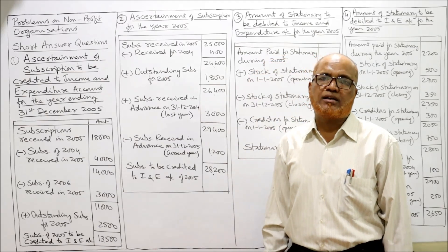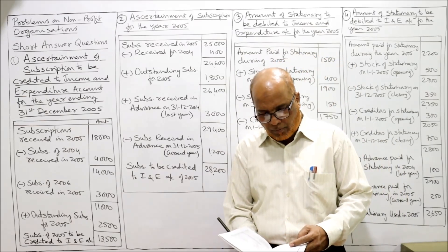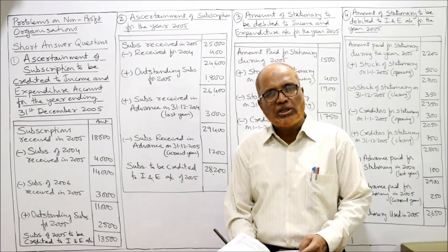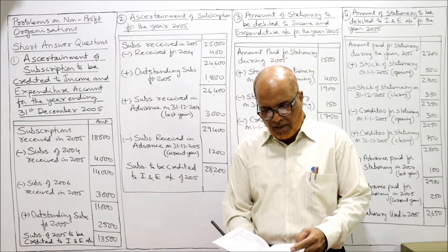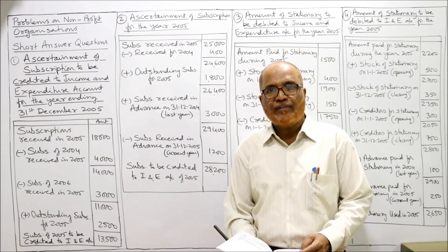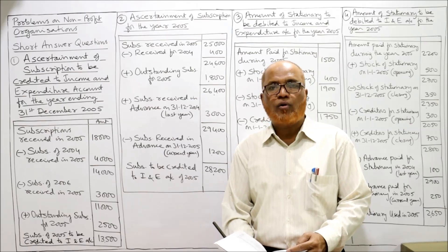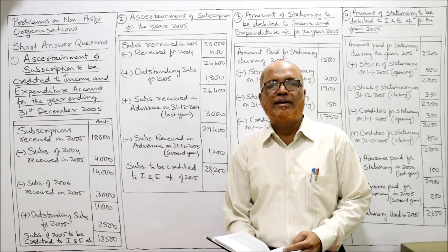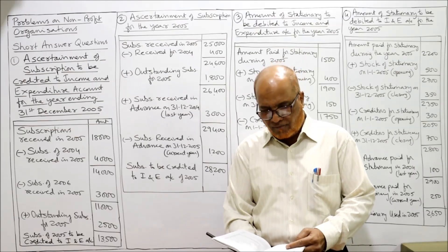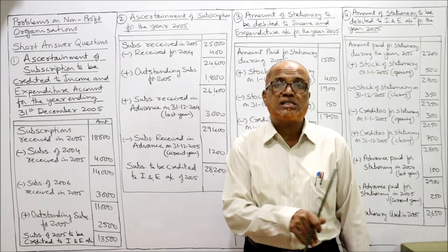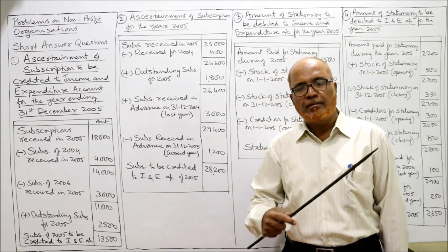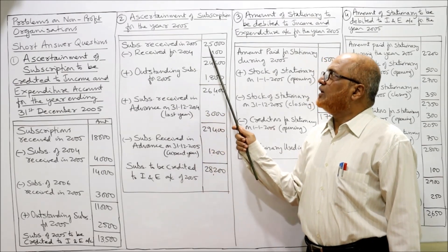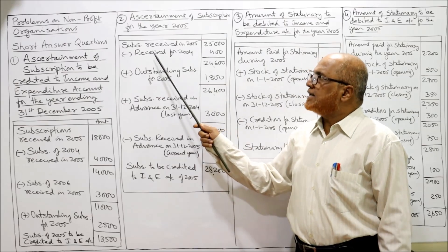That's the end of the first problem. Now the second problem: ascertain the amount towards subscription for the year 2005 on the basis of the following information — exactly similar. We need to find how much subscription income for 2005. Subscription received in 2005: 25,000. In brackets it is given: including 400 rupees for 2004. Our current year is 2005, and in that 25,000, 400 rupees is the subscription of last year 2004, so we will deduct it.